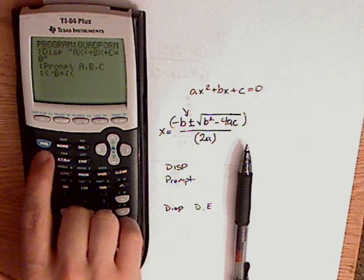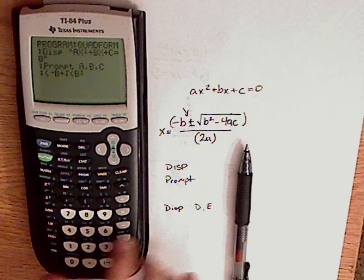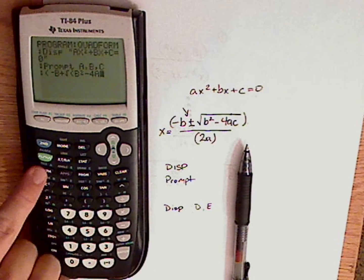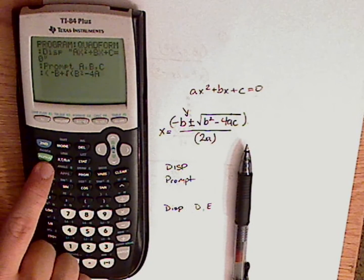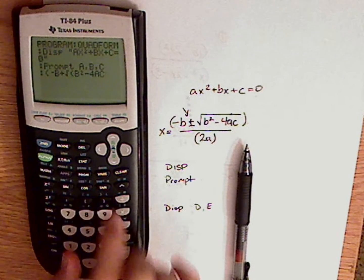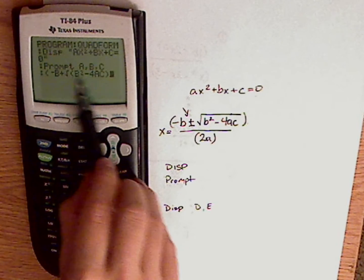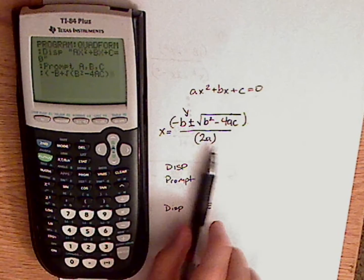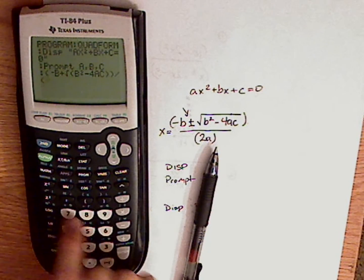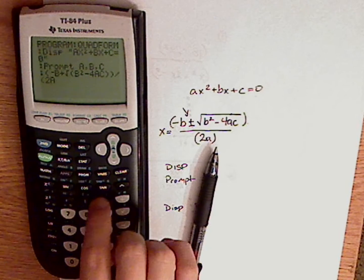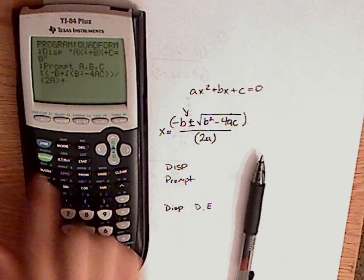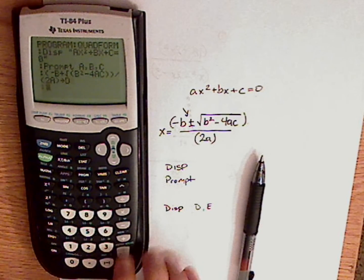And that's b squared minus 4, A. Again, to get the A, I'm just clicking alpha first. So A, C. Close the parentheses for this one, right, you see that? And I have to close the parentheses again. Divided by parentheses 2A, closed parentheses. Now I'm going to store that as D. Enter.